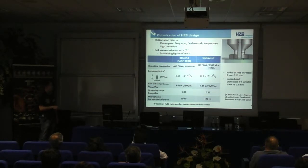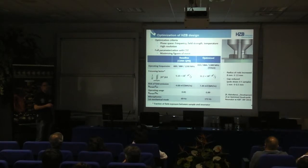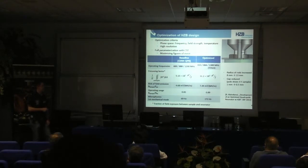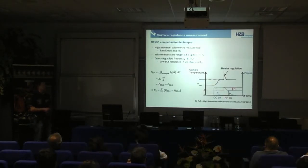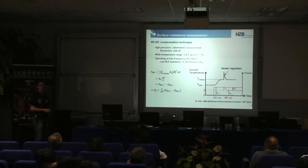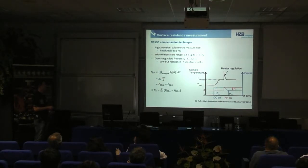The radius of the rods has been significantly increased from 8 to 30 millimeters, which also leads to better cooling of these rods. We do not use an RF measurement to infer the surface resistance — we do this via a calorimetric measurement, and this leads to the sub-nano-ohm resolution.